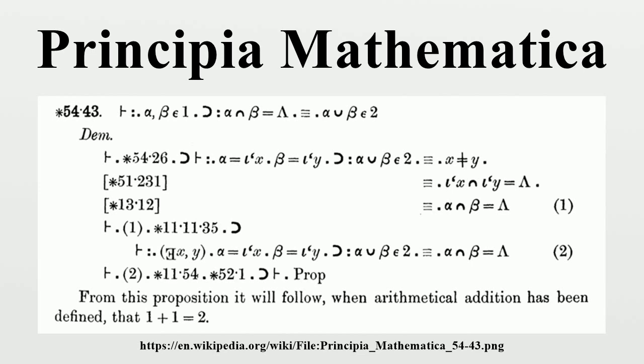1.7, If p is an elementary proposition, tilde p is an elementary proposition, primitive proposition. 1.71, If p and q are elementary propositions, p V q is an elementary proposition, primitive proposition. 1.72, If Φp and ψp are elementary propositional functions which take elementary propositions as arguments, Φp implies ψp is an elementary proposition, primitive proposition.